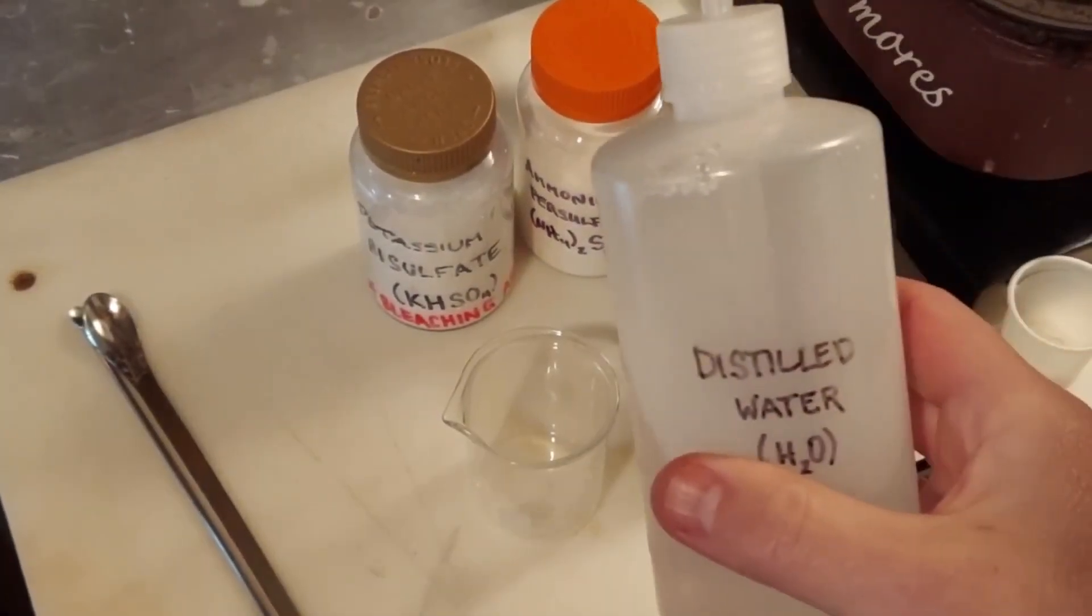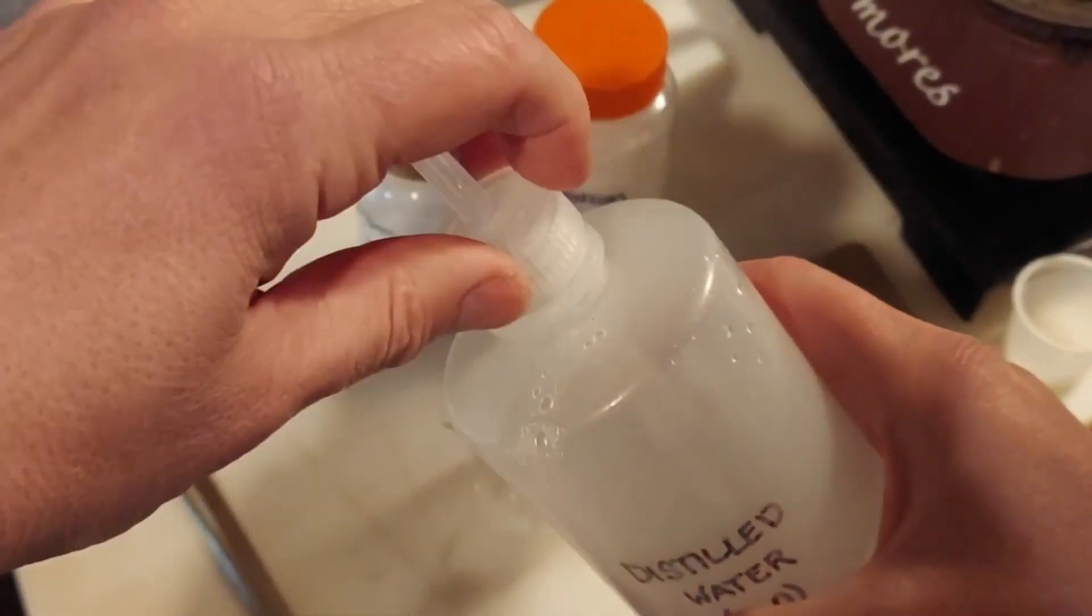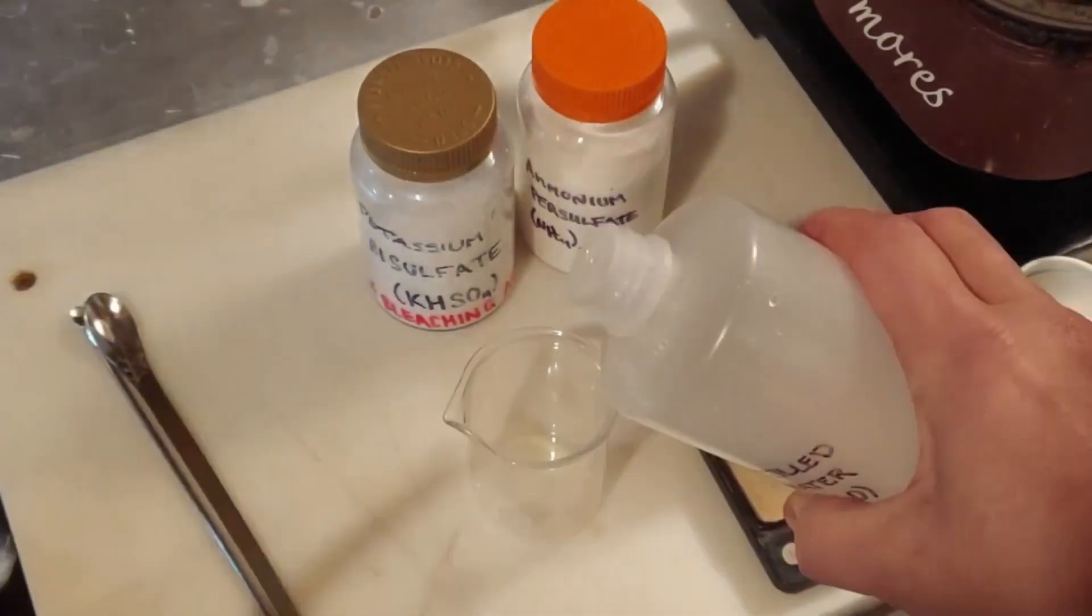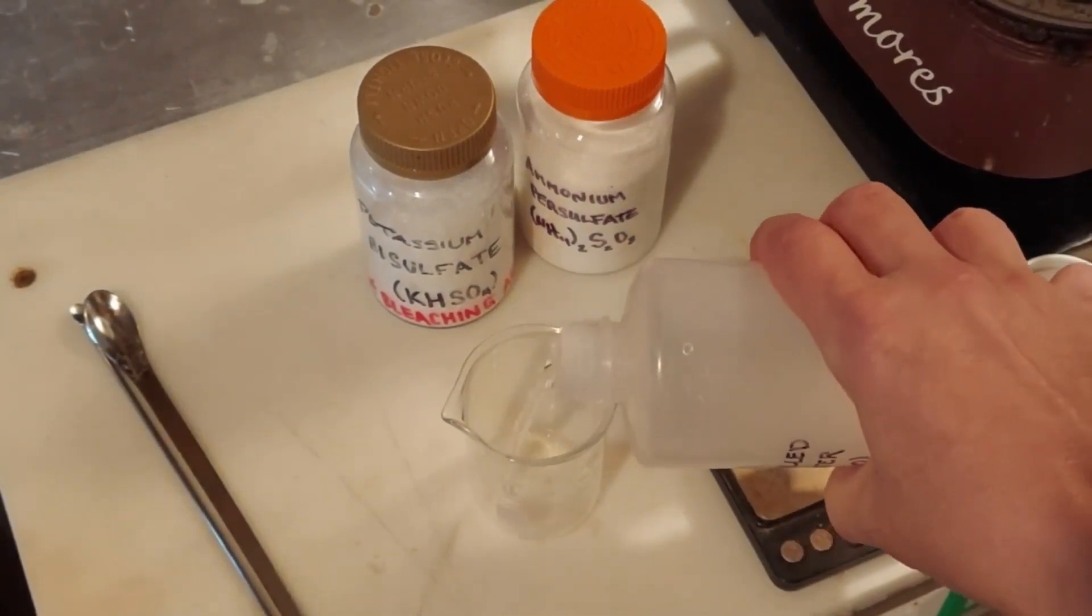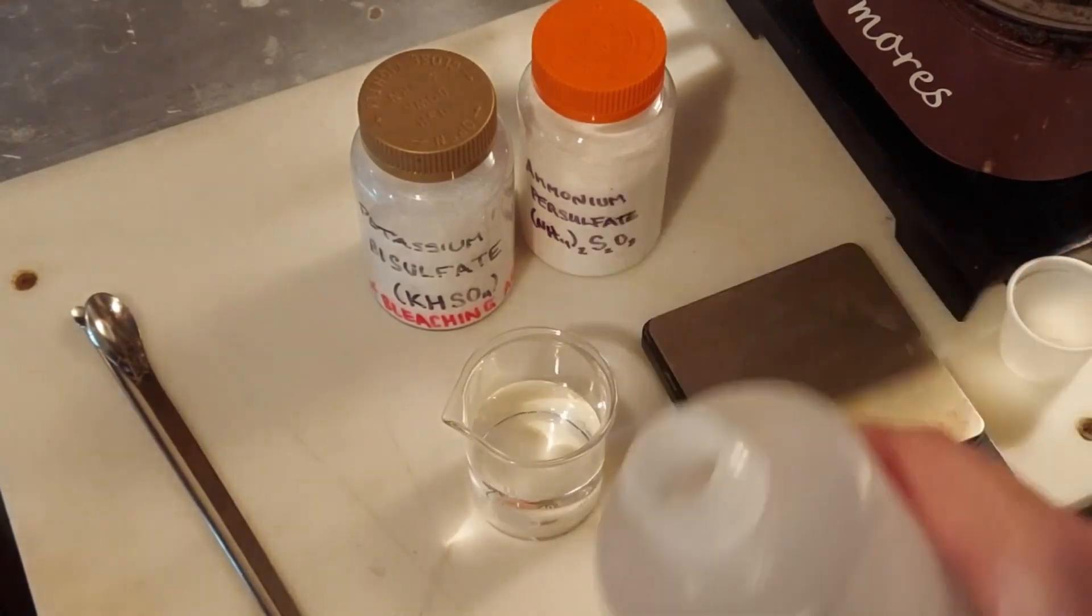The first step in making our potassium persulfate, of course, is the 60 milliliters of distilled water. I'm not going to squirt it out of here. That would take forever, honestly. But there we go.